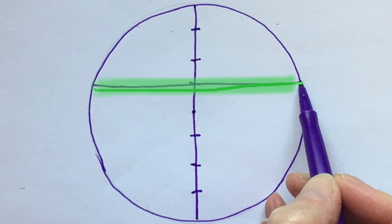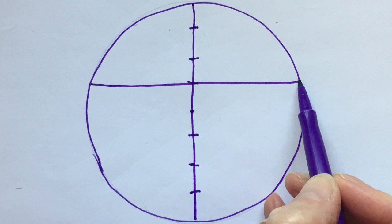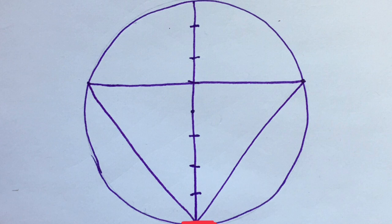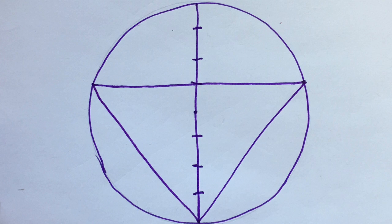The first horizontal line is one mark up from the bindu. Draw that horizontal line so it touches the sides of the circle. Connect that line to the bottom point where the vertical line touches the bottom of the circle. You now have your first downward pointing triangle.